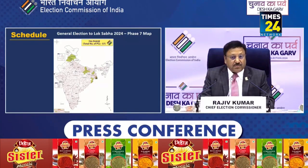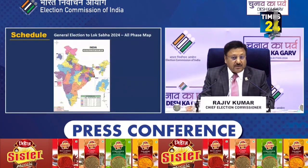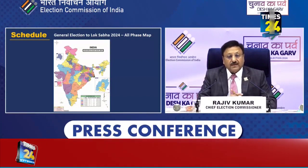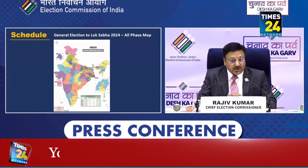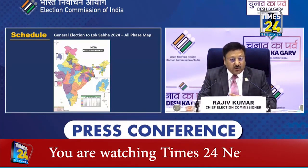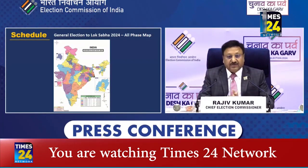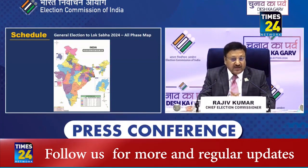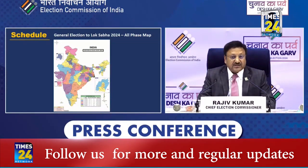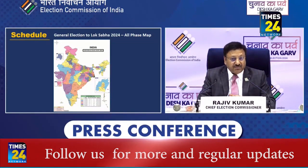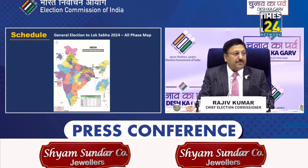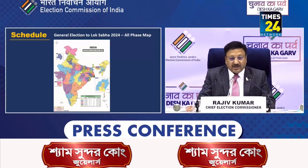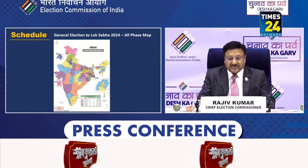Bengal, Bihar, Odisha — this is how the map will look. Yellow denotes the first phase and accordingly the legends are given. We will share this map also with you so that you can keep it with you and refer to it accordingly.